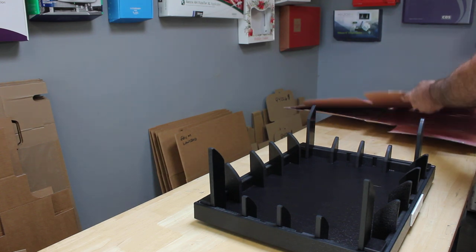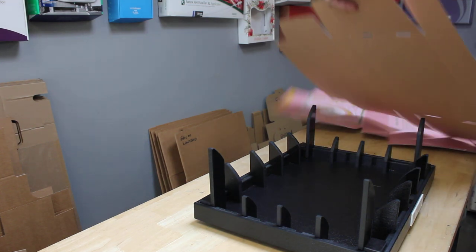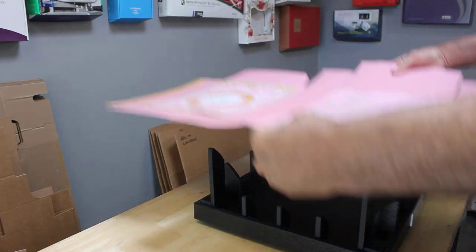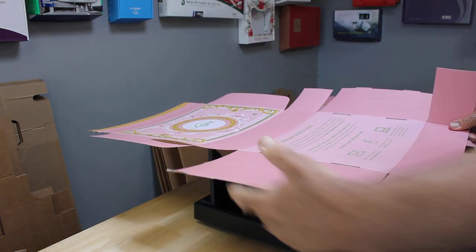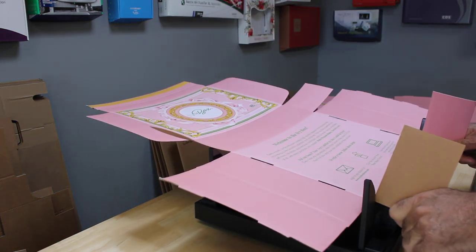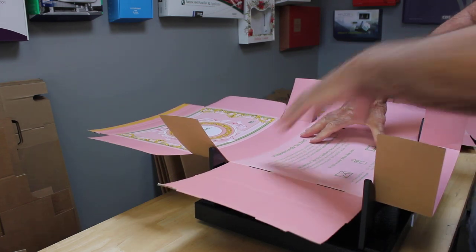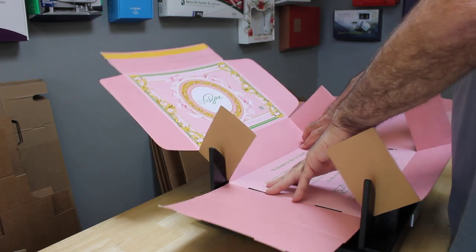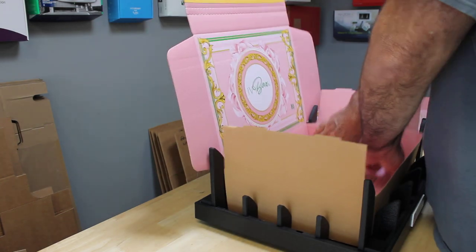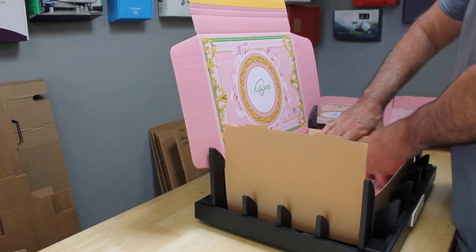We're going to grab our box. If you're having difficulty getting it lined up, you can break these scores here. You can pull them up against the pillars and then set it into the fixture this way. You can then press it down and make your folds.